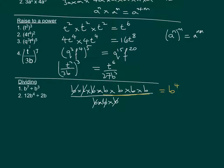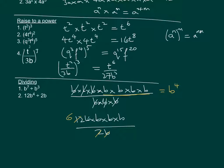For the last example we have 12b to the power of 4 — that's 12 times b times b times b times b — all over 2b. The 12 and 2 cancel to give 6, and the b on the bottom cancels with one of the b's on top, leaving us with 6b to the power of 3.